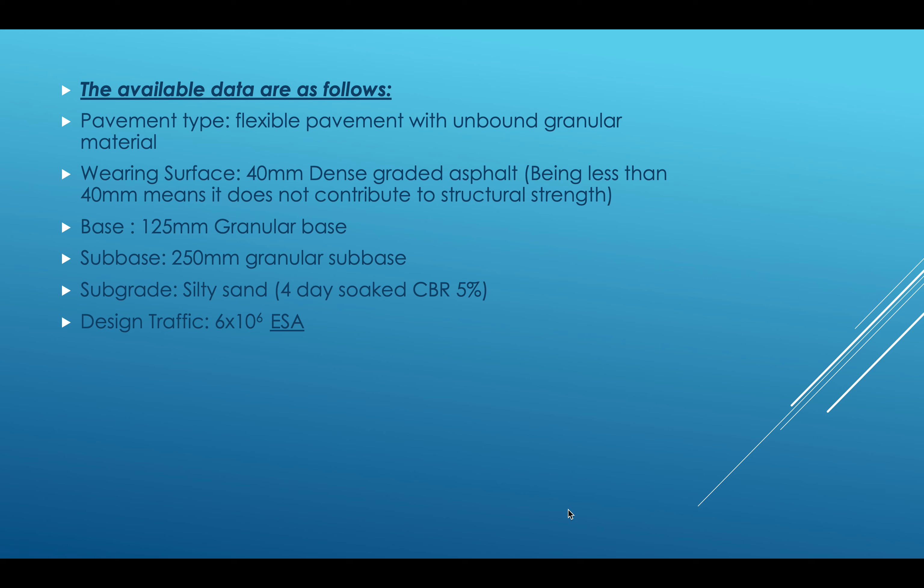The pavement type we've selected is a flexible pavement with unbound granular material, which basically has a wearing surface with granular materials — loose gravels and compacted loose gravels with a seal. The sealing is 40mm SE10 dense graded asphalt. The subsequent layers are a 125mm granular base and a 250mm granular sub-base.